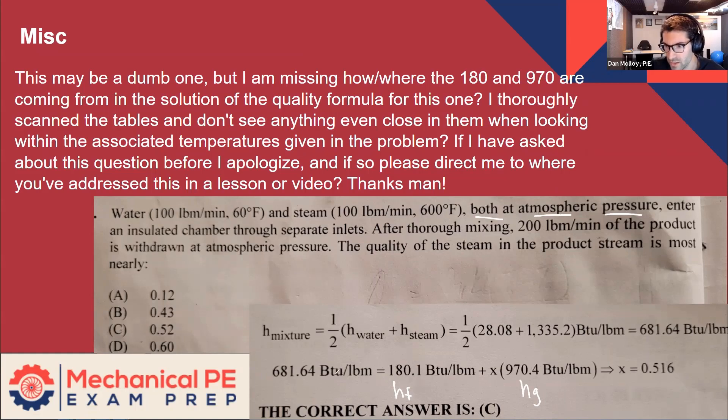And then this is just a different way of showing the quality equation. So we write it a couple of different ways. Sometimes we write H equals HF plus quality times HFG. That would be fine. That's actually how they're showing it here. And H is known and these numbers are looked up in the table and then you're able to find the quality.